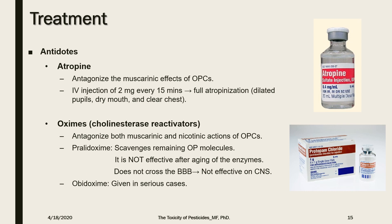Oximes are the second important antidote in the treatment of organophosphate poisoning. Their primary role is to reactivate acetylcholinesterase enzymes after inhibition by organophosphates, by removing organophosphate molecules from the active sites of the enzyme. Unlike atropine, oximes react directly with organophosphate molecules and do not affect the post-synaptic receptors of acetylcholine, therefore equally inhibiting both nicotinic and muscarinic manifestations. However, pralidoxime does not cross the blood-brain barrier and does not reverse CNS manifestations.